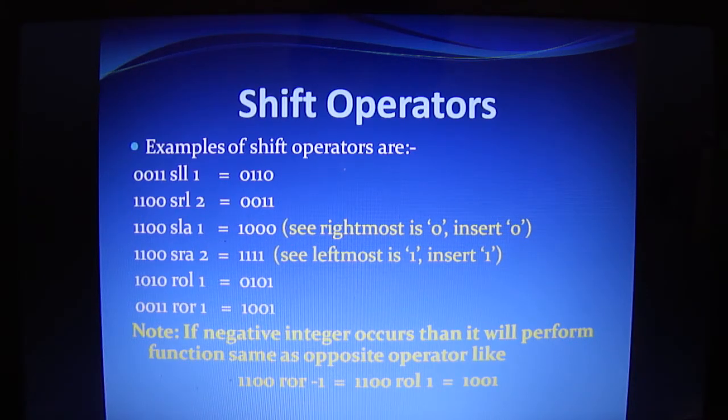If you are using ROL or ROR, it will shift the bits towards left and right as per the command. Now, if you are using the negative integer to perform the functions, then it will perform the function as opposite operators. For example, if you are using 1100 ROL -1, here you are using the minus sign, then it will perform rotate left and give the answer as 1001.